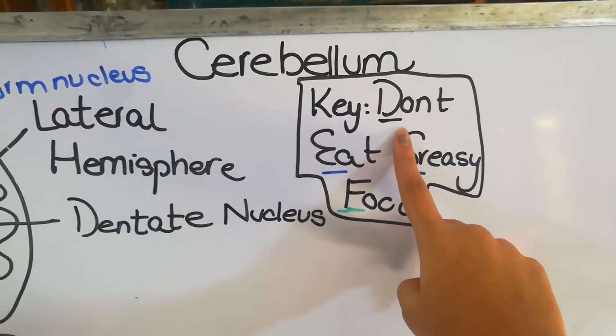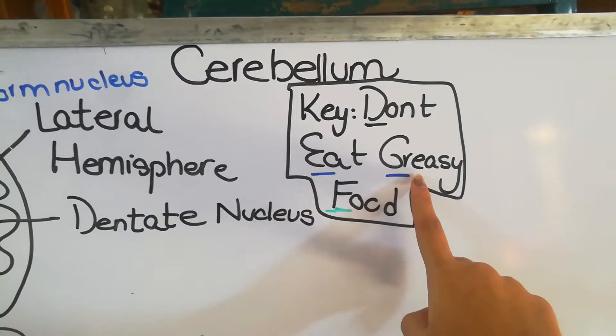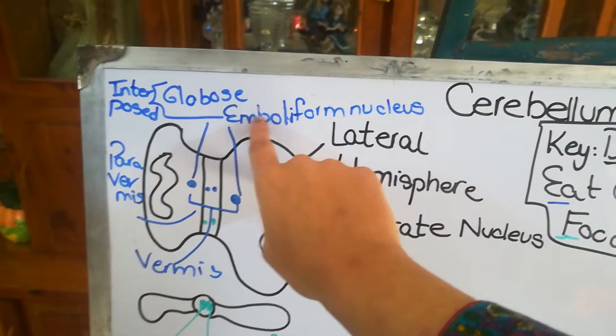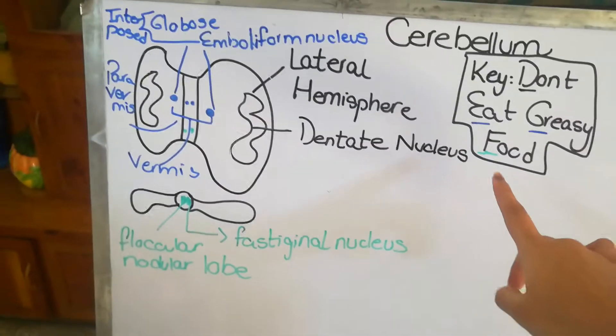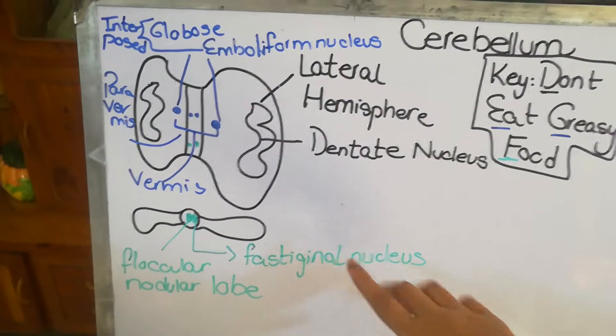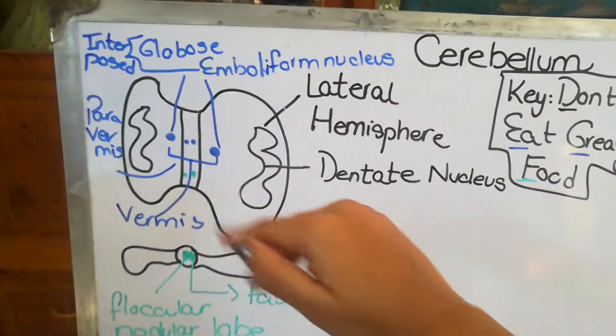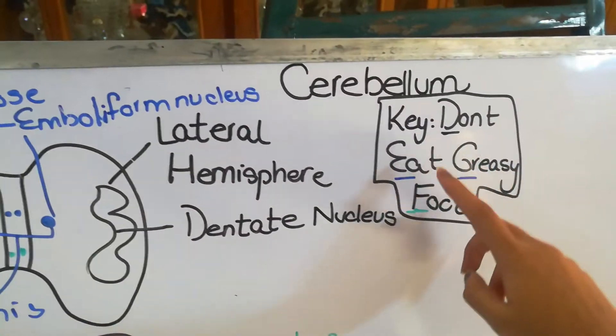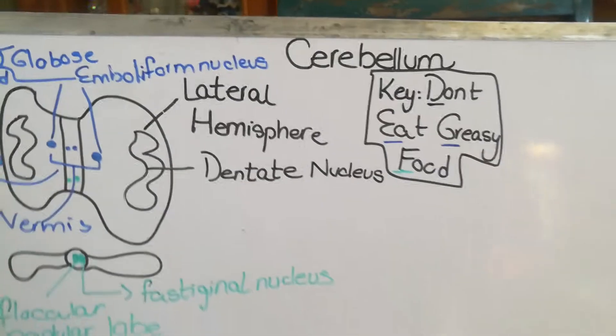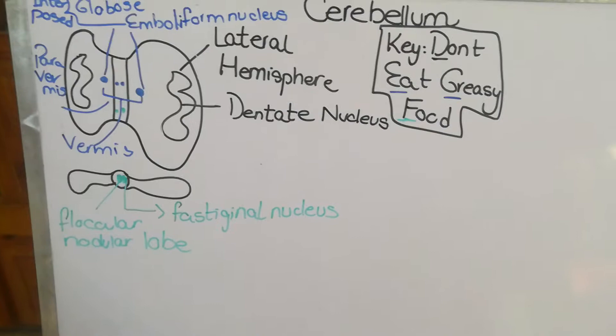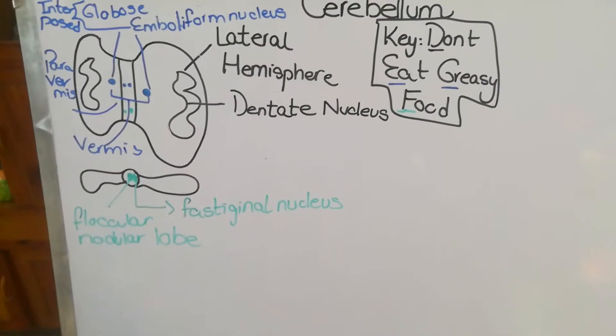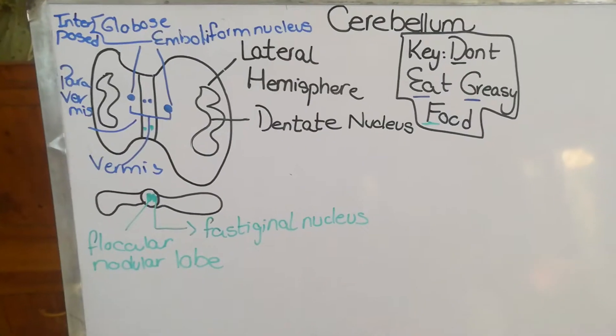Don't eat greasy food. D for dentate nucleus, E and G for emboliform nucleus and globose nucleus, and F for fastigial nucleus. This mnemonic helps memorize the names of the different cerebellar nuclei. You can create your own mnemonics to help you memorize more easily.